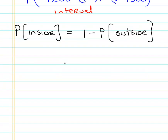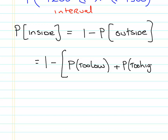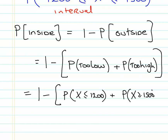And the probability of being inside that interval is the complement of the probability of being outside that interval. And the probability of being outside that interval is being the combination of the probability of being too low, plus the probability of being too high. Now, so this, we could break the problem down to two very simple sub-problems. So this is the probability of x less than or equal to 1,200 hours.